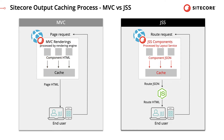On the other hand, in JSS, Output Caching saves the JSON that is returned by the layout service for any component that has caching enabled. The Node Server takes that JSON as input and executes JavaScript to generate HTML. This part of the process — transforming JSON to HTML in the JavaScript layer — needs to happen on every request.